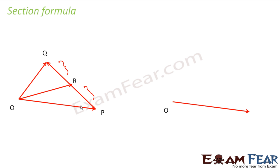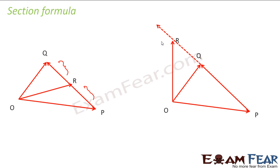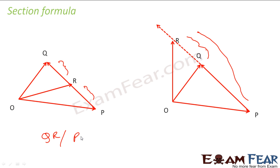Similarly, if I again have vector P and vector Q and vector PQ, I can divide this point externally also. So if R is a point external to vector PQ — I extend this — I can divide it externally as well. In both cases, whether internal or external, the two sections are QR and RP, that is the ratio QR by RP.